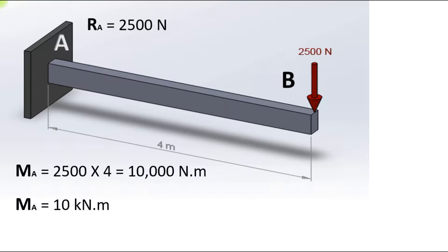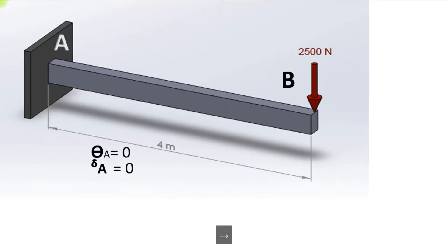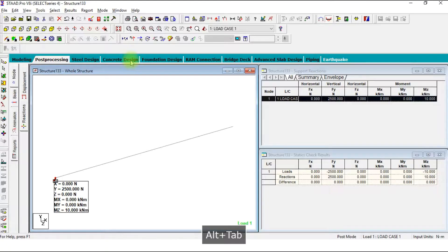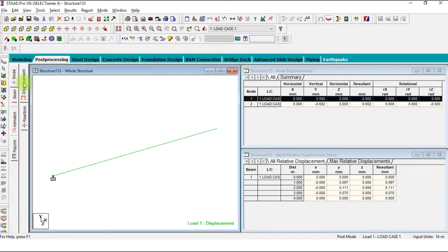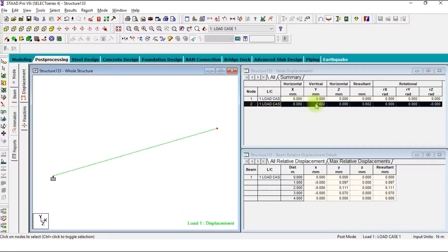Now we are going to check displacement results. At the fixed end there is no rotation and there is no deflection. Let's check out the deflection results, go to deflections. At fixed end there is no deflection and no rotation.